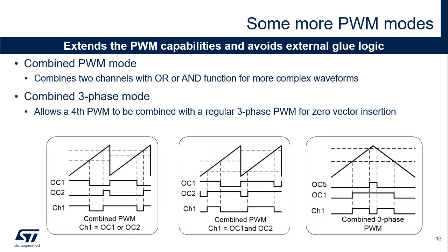The combined PWM mode allows a logic combination of two PWM signals to be generated by adjacent channels — output compare 1 and 2, or output compare 3 and 4. The PWMs can be ORed and ANDed to create complex waveforms, typically allowing two periodic pulses with any pulse width and any phase relationship. Combined three-phase PWM mode allows 1 to 3 center aligned PWM signals to be generated with a single programmable signal inserted in the middle of the pulses. Channel 5 of the timer can be combined with channels 1, 2, and 3 to insert a low state in the middle of a centered pattern PWM signal, greatly simplifying low-cost current sensing techniques using zero-vector insertion.